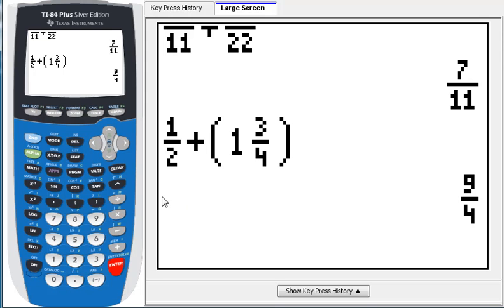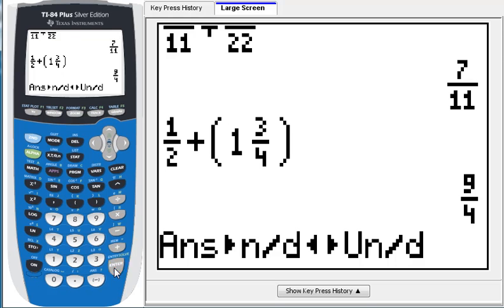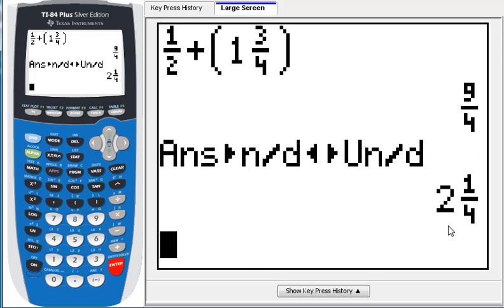But if it says to deliver the answer as a mixed number, then what you need to do is press alpha y equals. And then right down here, option number 3 will convert it to a mixed number. And if it's a mixed number, it'll convert it to an improper fraction. So, there you go.